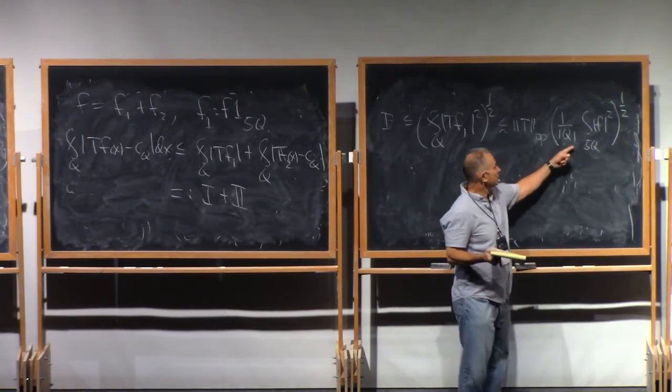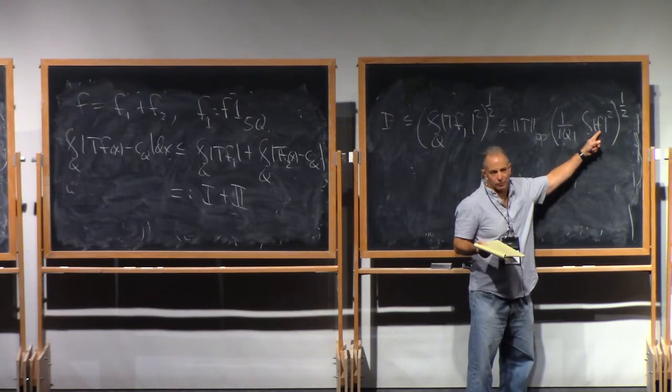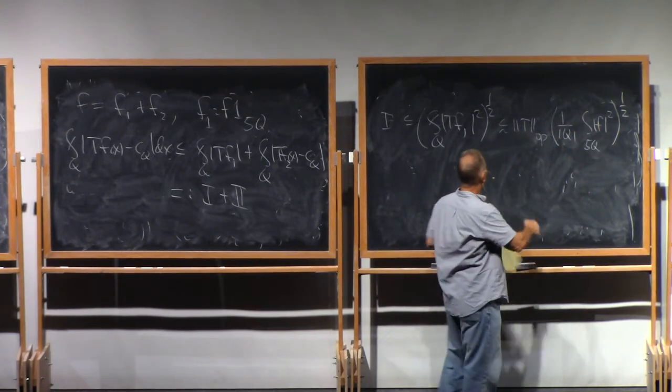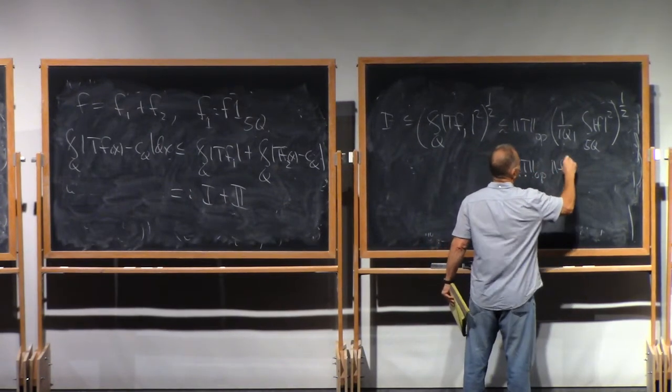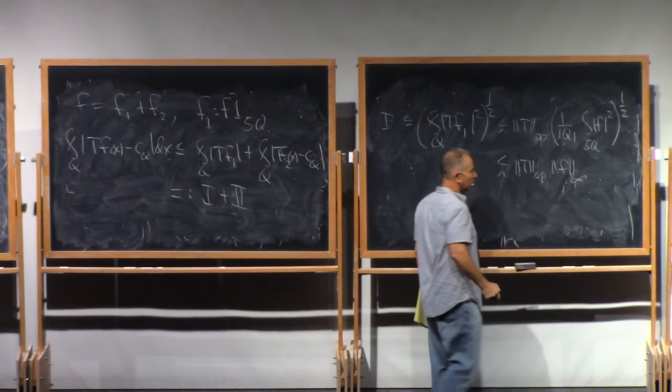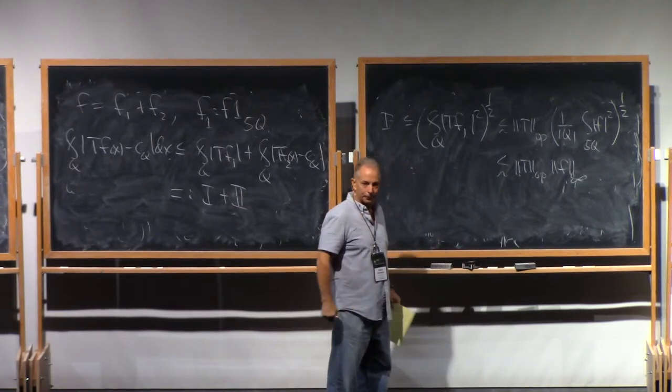So up to a constant, we're just taking an average of this L-infinity function. Of course, that's controlled by the L-infinity norm, which is the bound we want for that term.